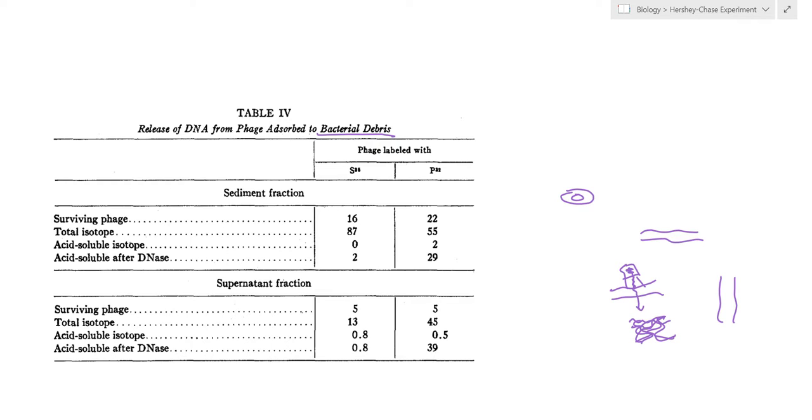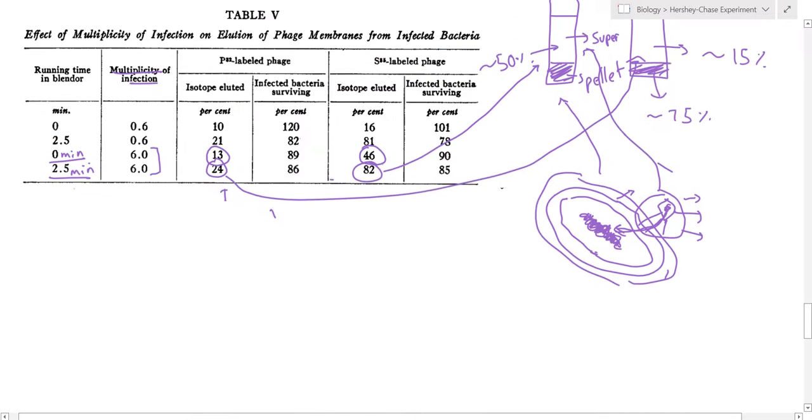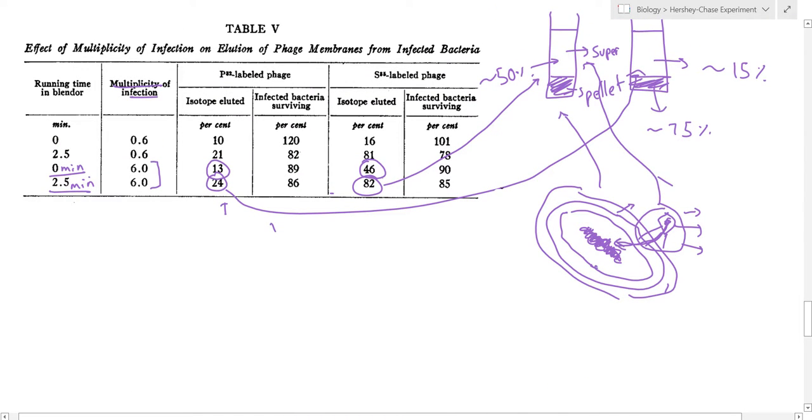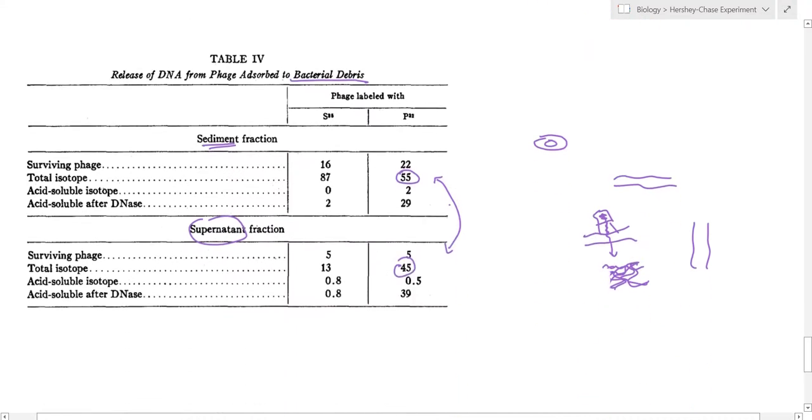Hence, this time when the mixture was centrifuged it was found that 55% of the sediment or pellet contained phosphorus, only 55% and 45% of it was in the supernatant. So around half of it entered the less dense part and half of it entered the more dense part indicating that the earlier difference in phosphorus in the supernatant and pellet was because it was in fact in the DNA and the DNA was in fact protected by the cells which no longer existed.